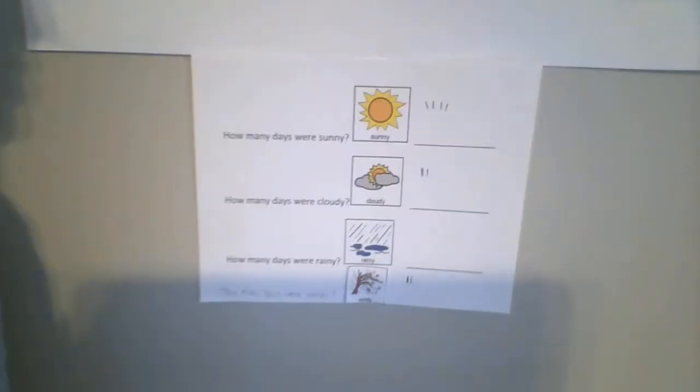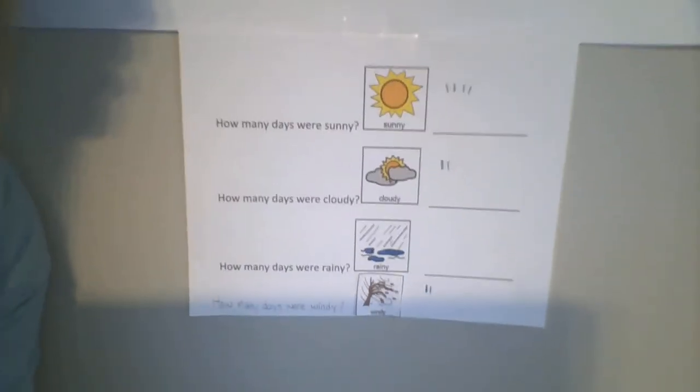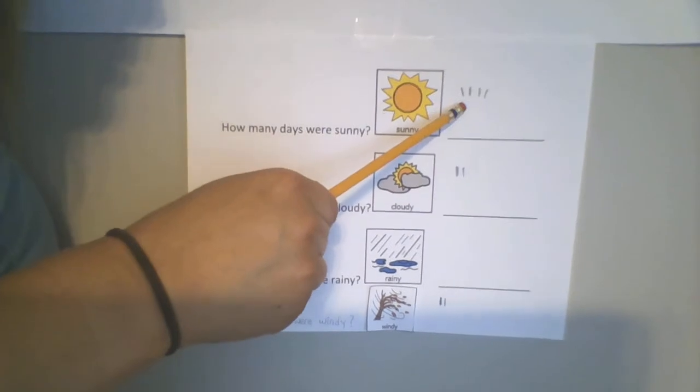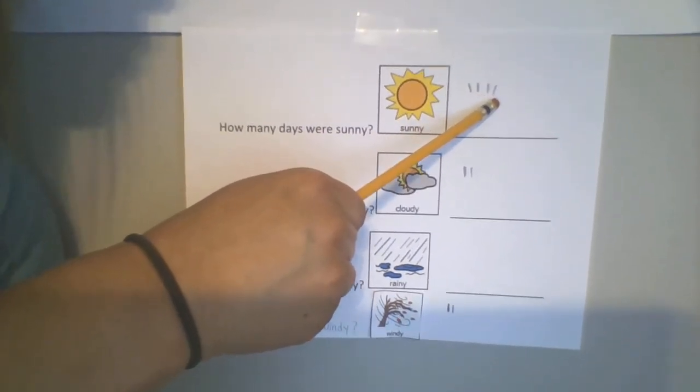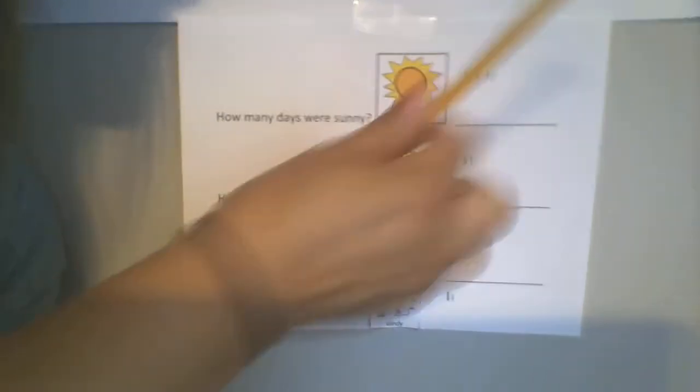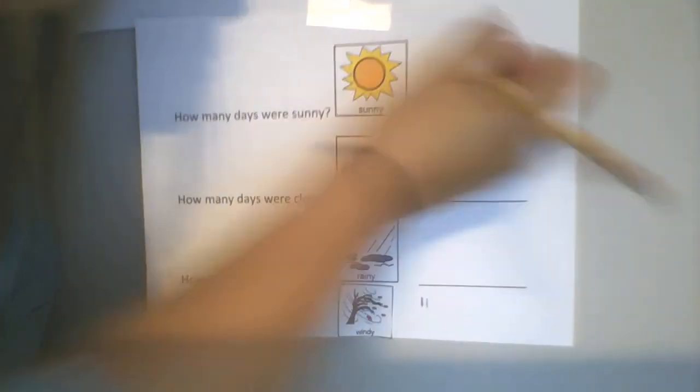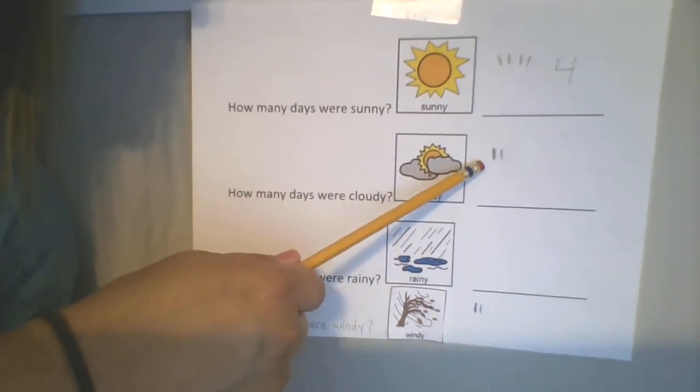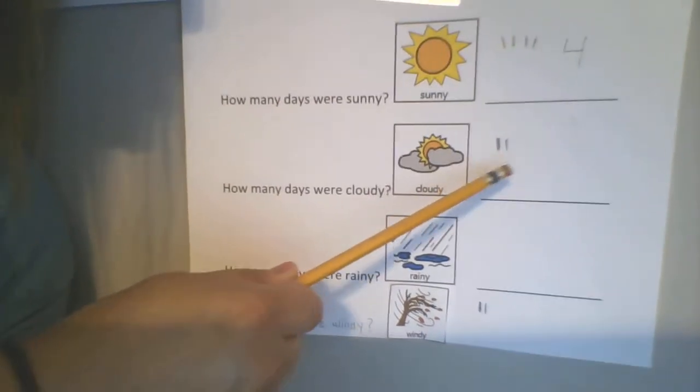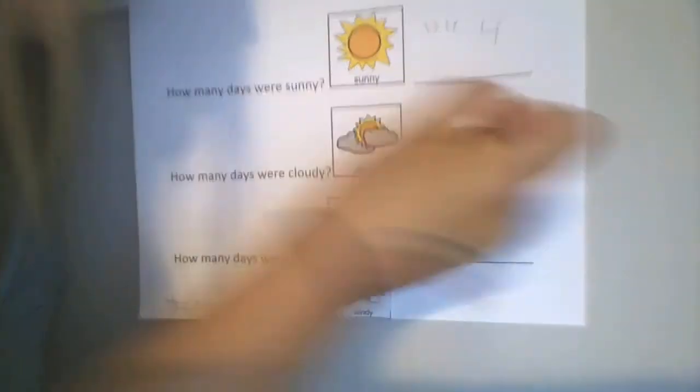So friends, let's add these up. Here's our weather chart. You can see our sun. One, two, three, four. Four sunny days. All of our school days this week were sunny. Cloudy. One, two. There were two cloudy days.